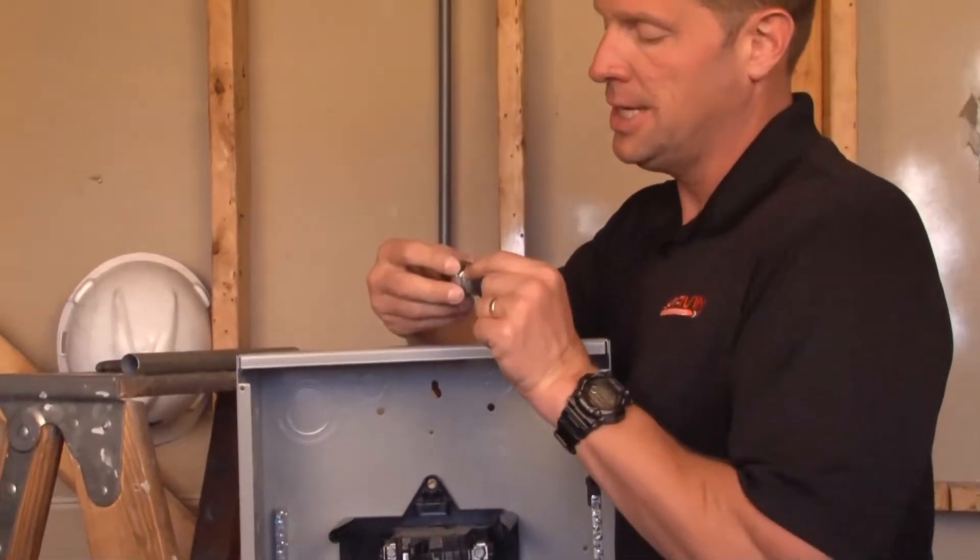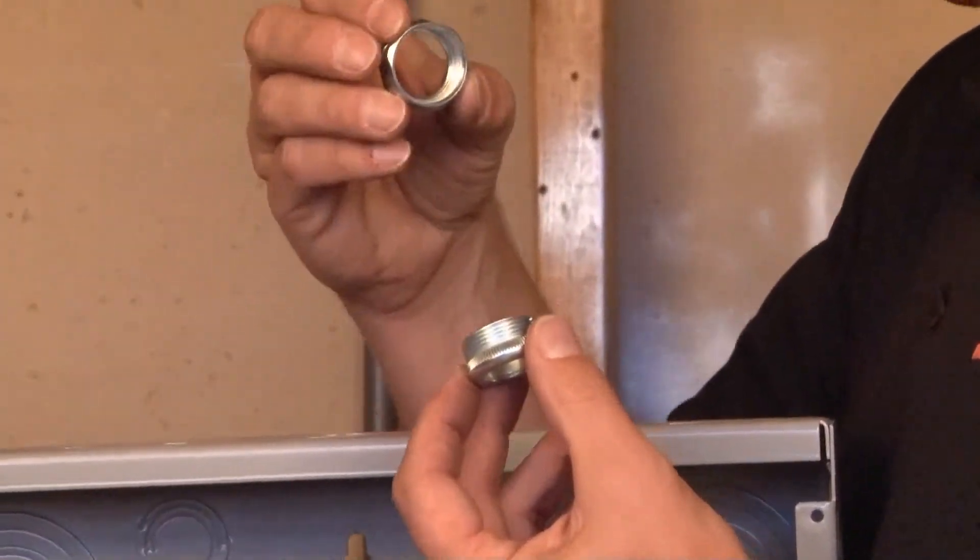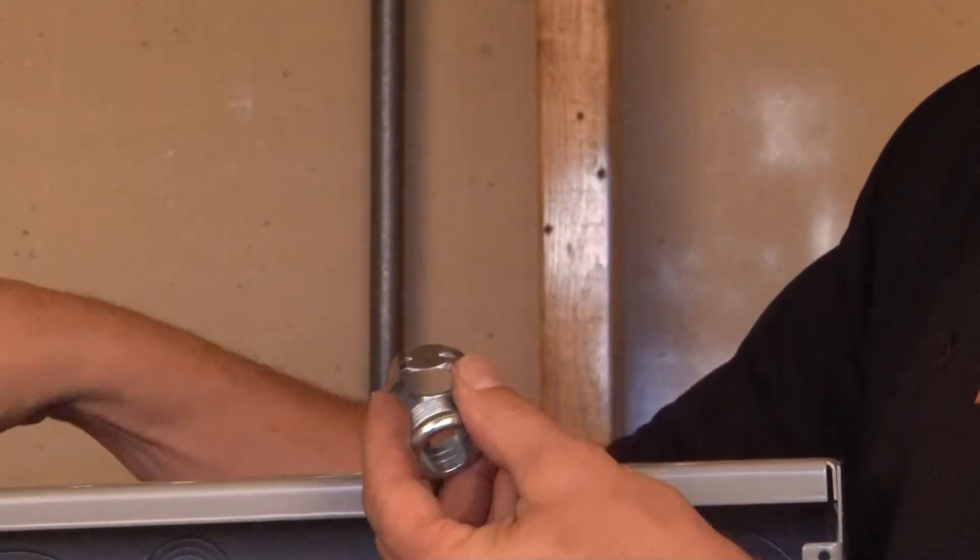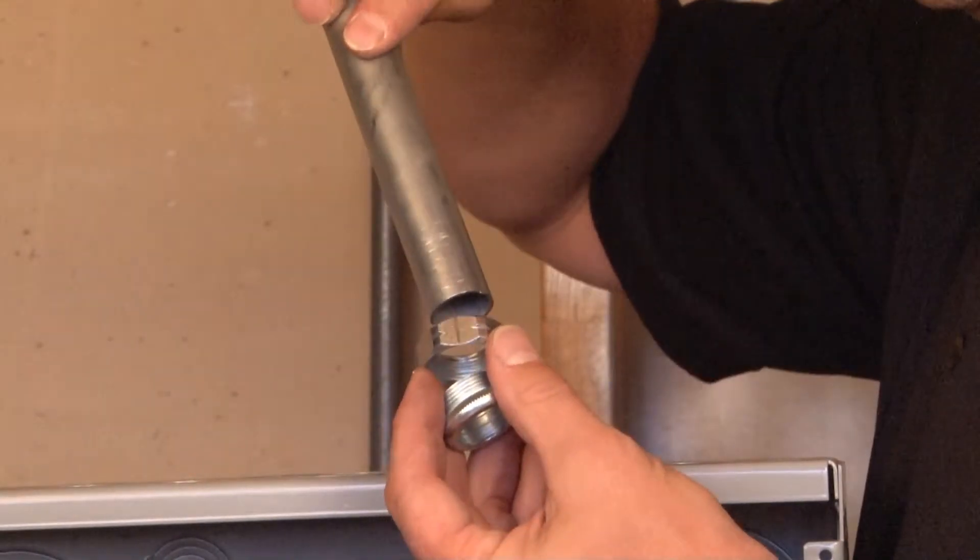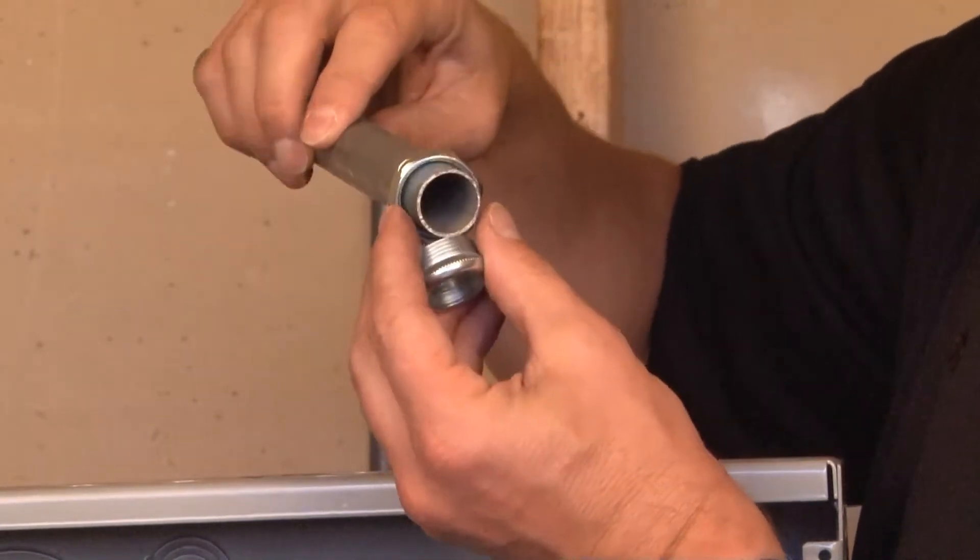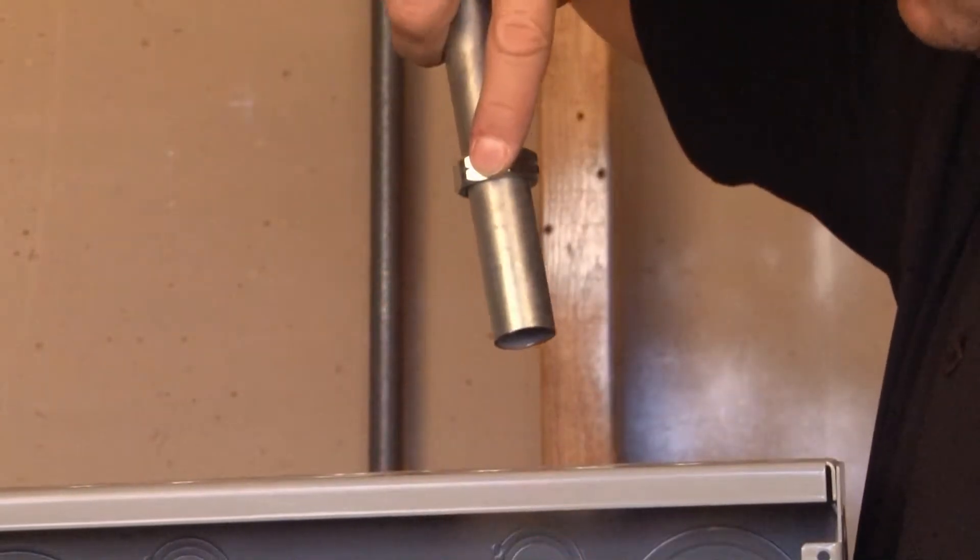Here's how it works. You simply take the two pieces apart, the outside gland you put on your EMT conduit that you want to install on your particular panel or box.